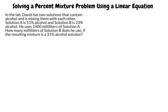Here is the problem. In the lab, David has two solutions that contain alcohol and is mixing them with each other. Solution A is 51% alcohol and solution B is 23% alcohol. He uses 1400 milliliters of solution A. How many milliliters of solution B does he use if the resulting mixture has a 31% alcohol solution?